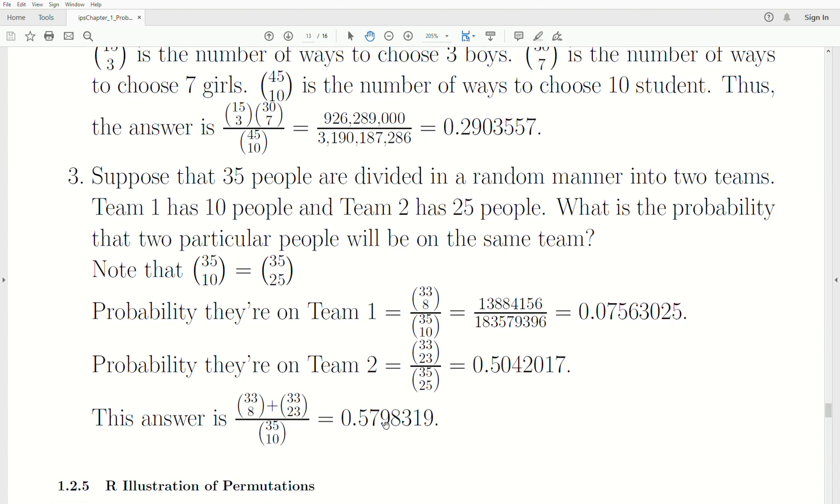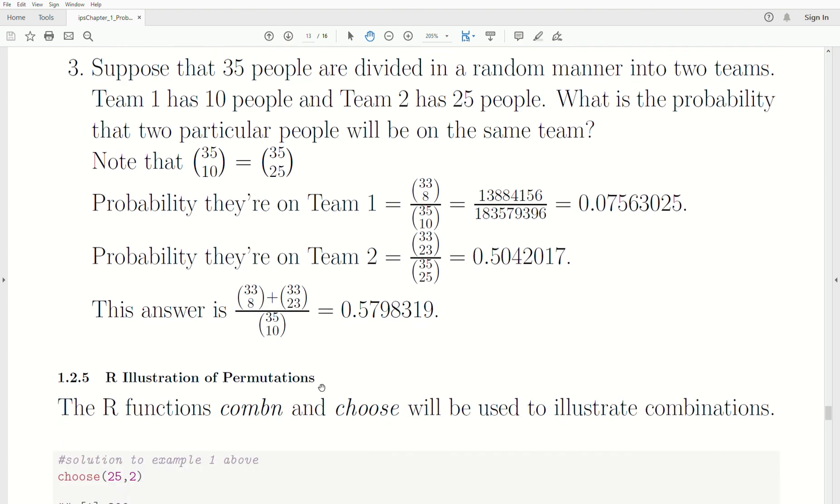So we just add these, and then that's the answer. So it's roughly 57.9%. And we add them. Note that the denominator, even though they look different here, it's the same number. And that's it.